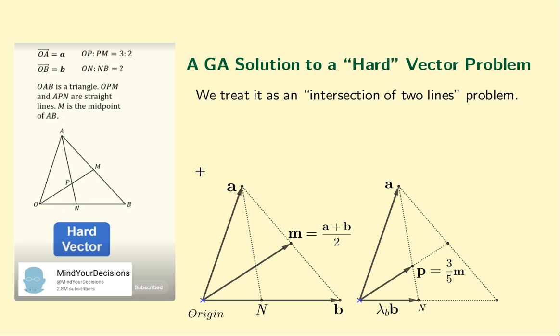Well, what we're asked to do is to find the ratio of the lengths ON and NB, knowing that M is the midpoint of side AB and that the line from A to N divides the segment OM in the ratio three to two.